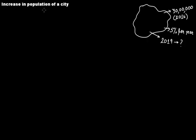Let's say that you have to find the increase in population of a city. Suppose at the end of 2016, the population of this city is 30 lakh. Every year, population increases by 5% per year. You can think of this as the interest on a loan — just as interest is calculated at 5% per annum, this 30 lakh is increasing every year by 5%, just like interest.